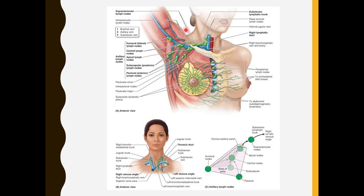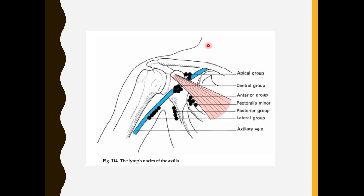In the diagram, all five axillary lymph node groups are visible: lateral (humeral) lymph nodes, central lymph nodes, apical lymph nodes, posterior (subscapular) lymph nodes, and anterior (pectoral) lymph nodes. The posterior, lateral, and anterior groups drain into the central lymph nodes, which ultimately drain into the apical lymph nodes. The apical nodes then drain into the supraclavicular lymph nodes and ultimately into the subclavian lymphatic trunk. The apical nodes are located below the clavicle and above the pectoralis minor muscle.